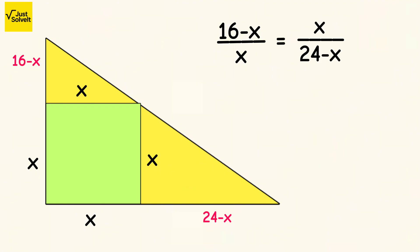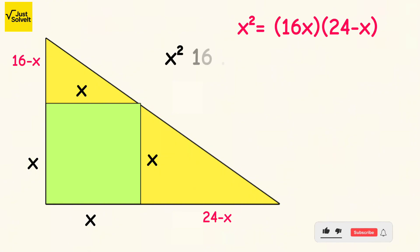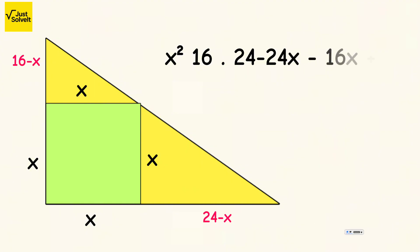Now cross-multiplying, x squared equals 16 minus x times 24 minus x. Let's multiply the right-hand side and simplify.